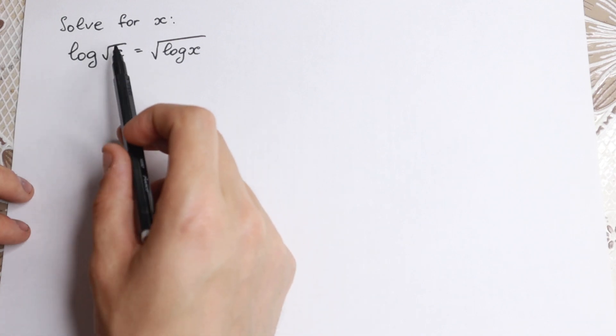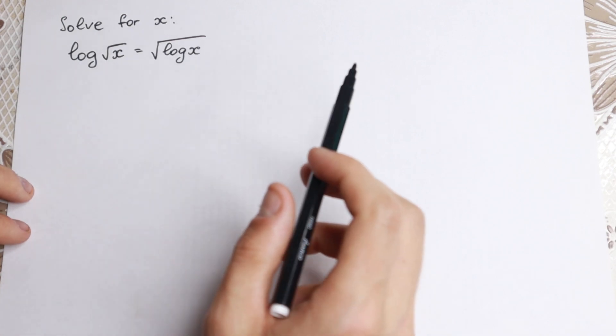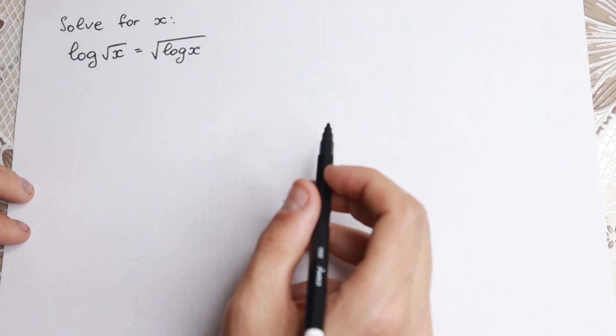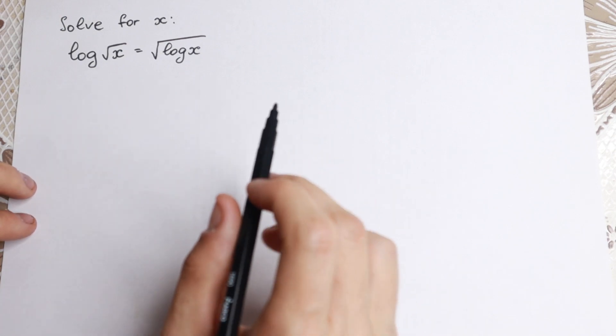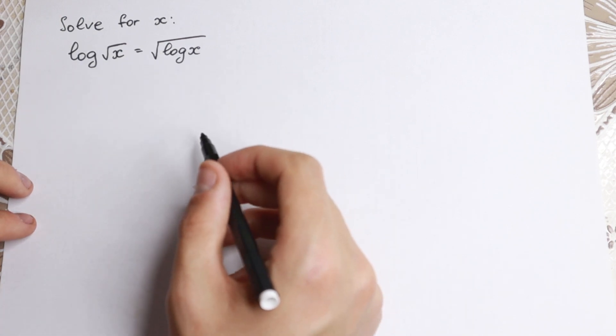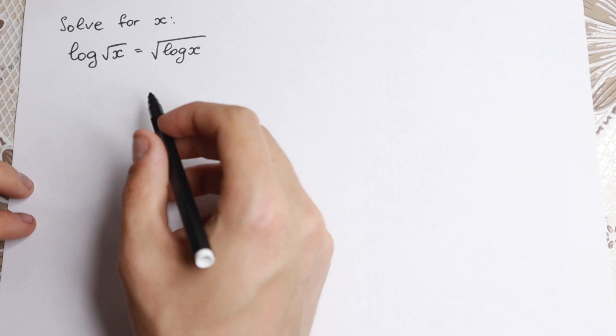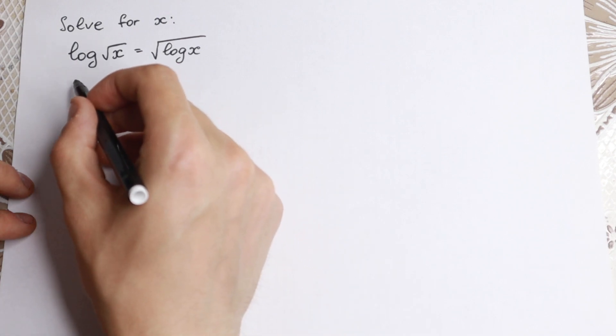We have logarithm squared of x equal to square root of logarithm x. How can we find our answer? First of all, I wanted to rewrite it in another way, and we are going to use a lot of properties right here.